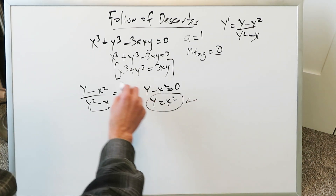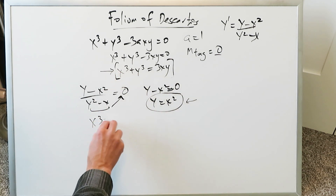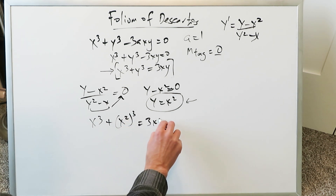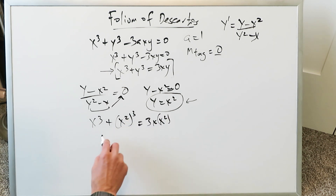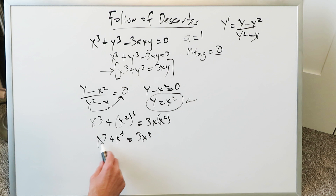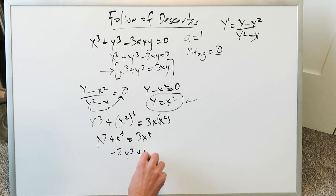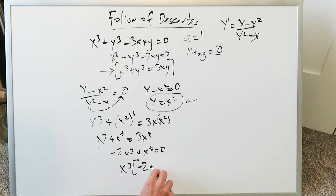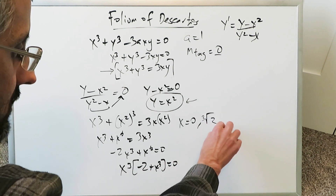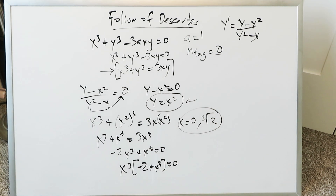Substituting y equals x squared into x cubed plus y cubed equals 3xy: you get x cubed plus (x squared) cubed equals 3x times x squared, which gives x cubed plus x to the 6th equals 3x cubed. Bringing everything to one side: x to the 6th minus 2x cubed equals 0. Factoring out x cubed: x cubed times (x cubed minus 2) equals 0. So x equals 0, or x cubed equals 2, giving x equals the cube root of 2.